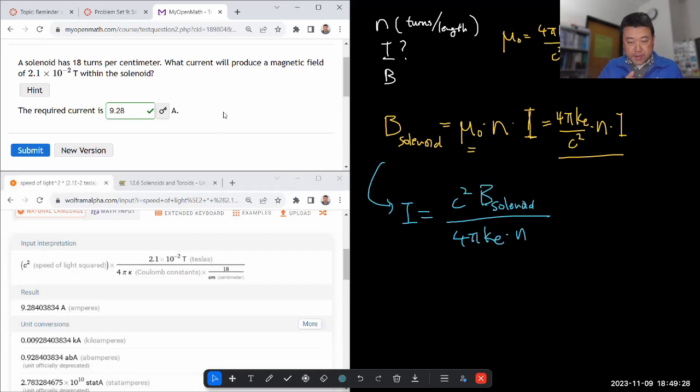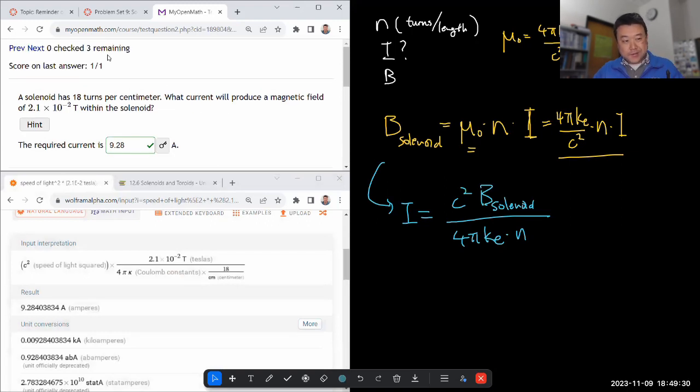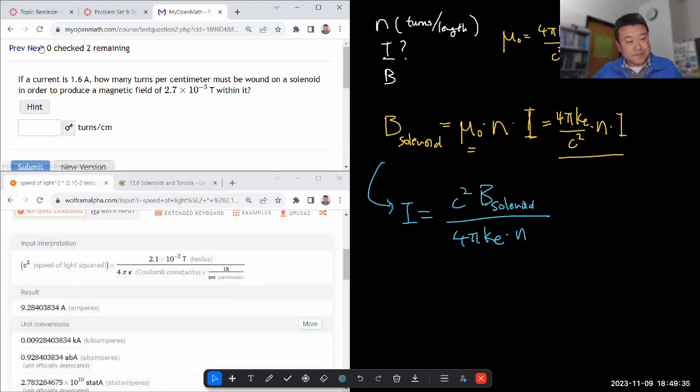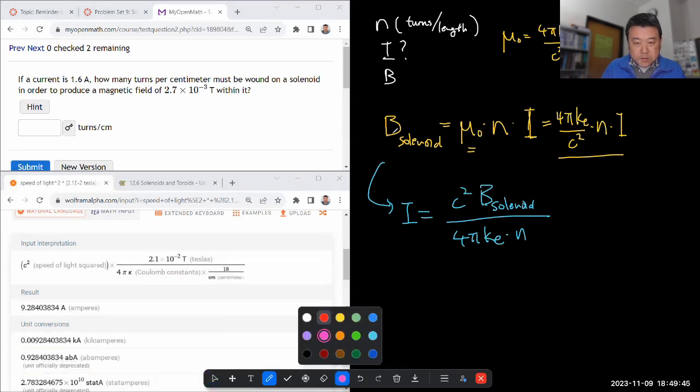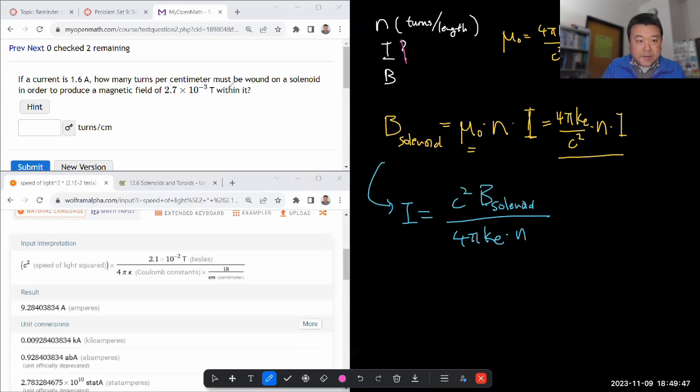So let me before I erase this, let me make sure to do the next question which is going to rely on the same set of expressions. So let me save some work by just doing the next question. It's asking if a current is okay. So we are changing what quantity is given and what quantity is being looked for. So current is now being given. How many turns per centimeter. Okay. So we are being asked for this.